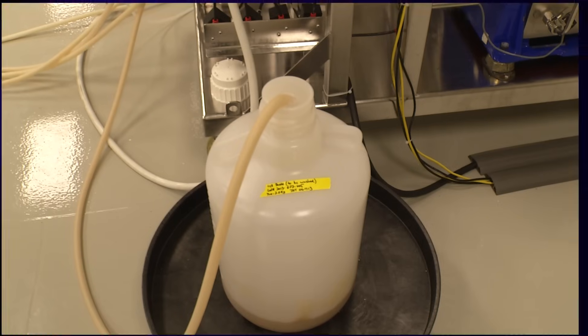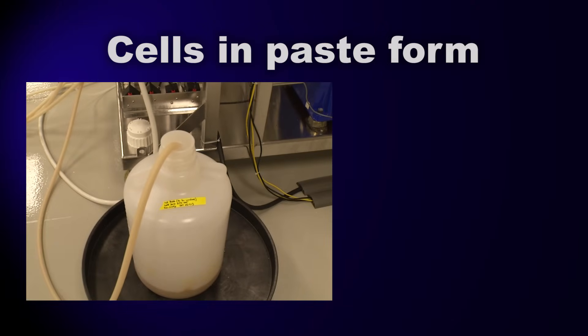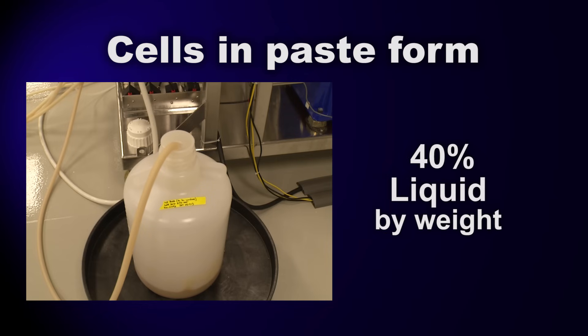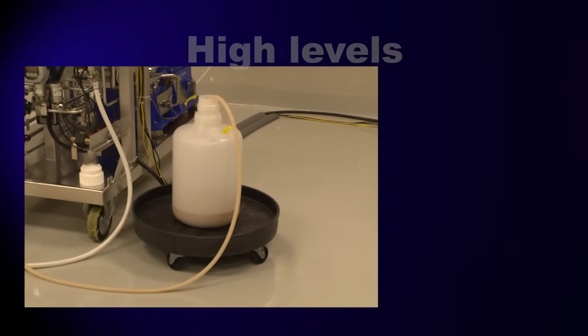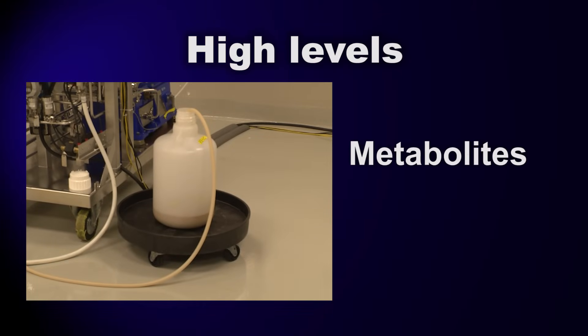At this point, the cells are in a paste form. Although most of the liquid has been removed, our cell paste is still about 40 percent liquid by weight. The remaining liquid contains high levels of metabolites and salts that could complicate downstream processing.